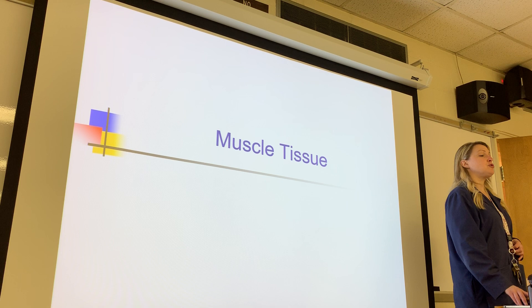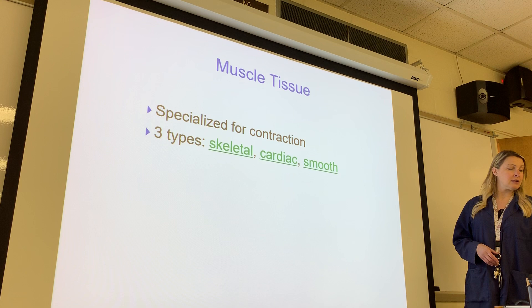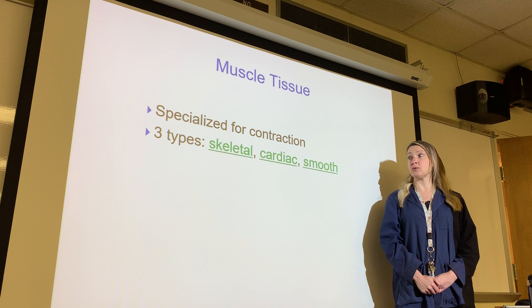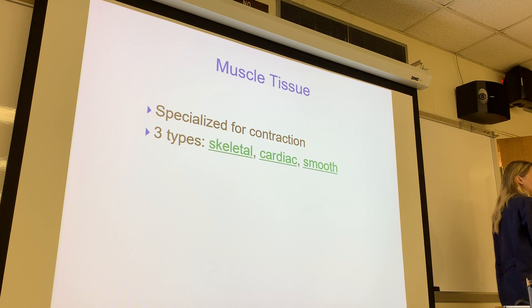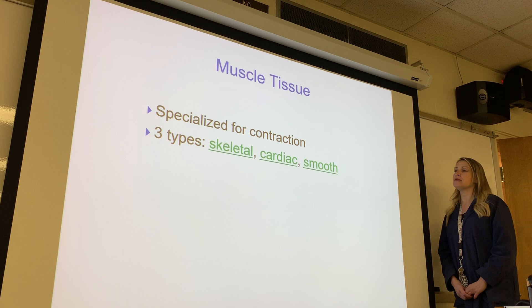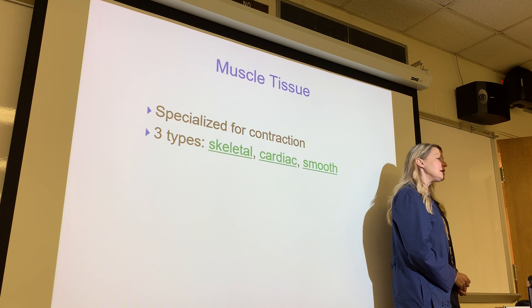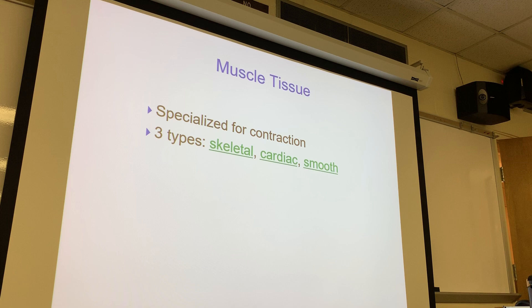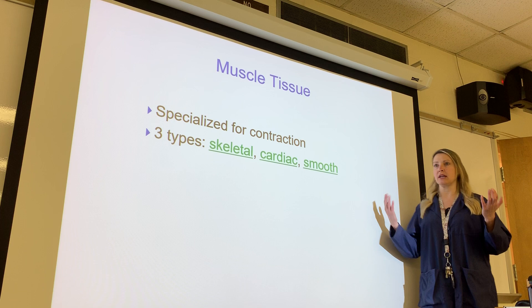The first tissue type is muscle tissue, which is specialized for contraction. There are three types: skeletal muscle, cardiac muscle, and smooth muscle. Skeletal muscle is voluntary — it moves the skeleton and we can control it. Cardiac muscle is pretty much involuntary, although we can influence our heart rate somewhat — for example, thinking of something angering can elevate it, or relaxing can lower it.